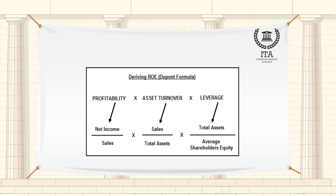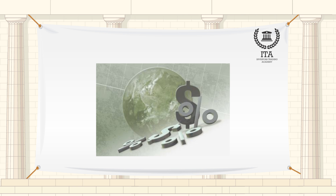Return on equity, known as ROE, is a closely watched number among knowledgeable investors. It is a strong measure of how well a company's management creates value for its shareholders. The number can be misleading, however, as it is vulnerable to measures that increase its value while also making the stock more risky.